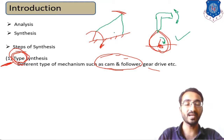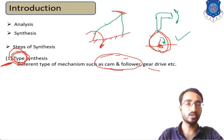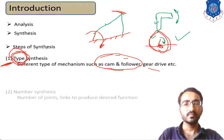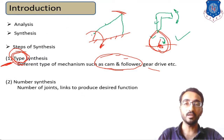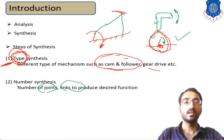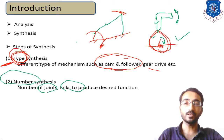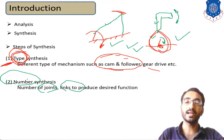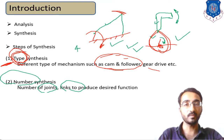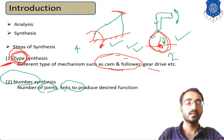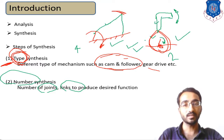After identifying the type of mechanism, the second step is Number Synthesis — identifying how many links and joints you are using to achieve the desired output: either two links, four links, or six links. After identifying your mechanism, you calculate how many number of links and joints are required. All these mathematical terms you identify in this step are known as Number Synthesis.